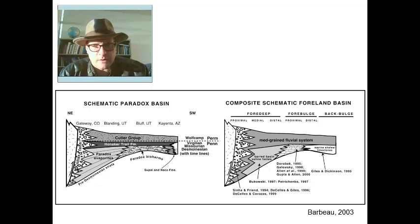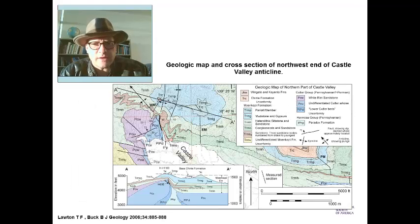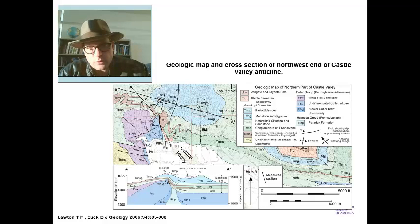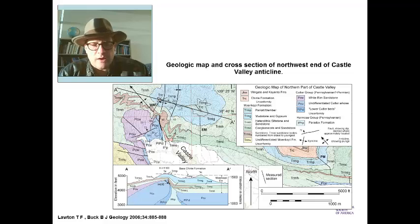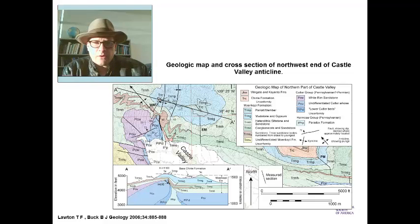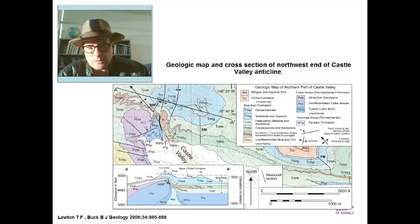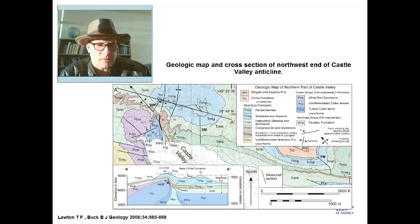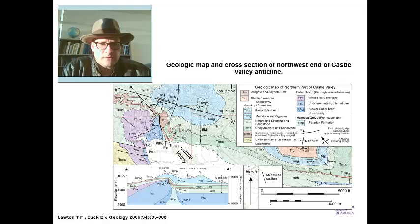Probably the really cool place to go in Utah to see actual outcrops of the Paradox is the Onion Creek diapir, sort of north of Moab. Here are some examples of outcrops of the Paradox Formation. This is located down near Castle Valley, a beautiful area just north of Moab.